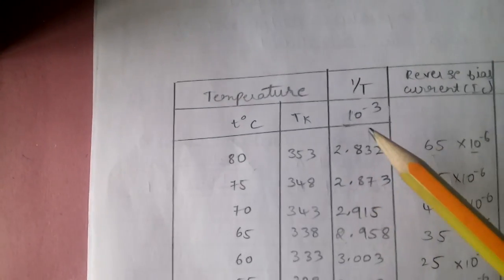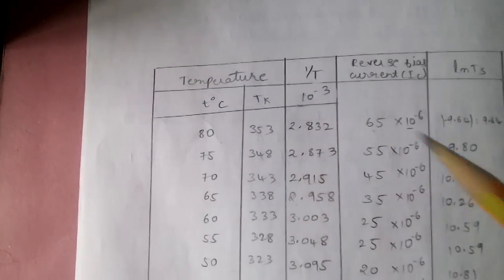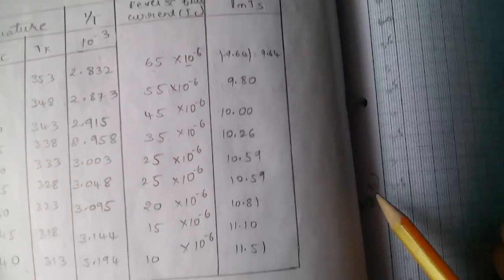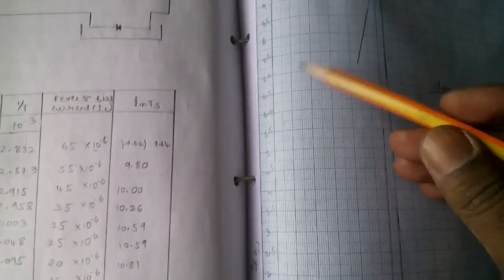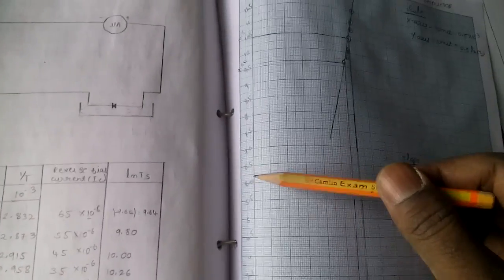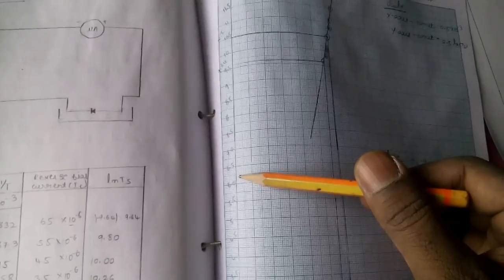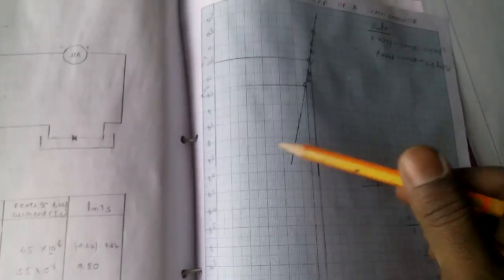Be careful when reading the 1/T values — they are written as values × 10^-3. Most people forget to include the 10^-3 factor. One student drew the graph and wrote 1/T × 10^-3 on the axis, and also noted the logarithm of current. He used a very lengthy scale.